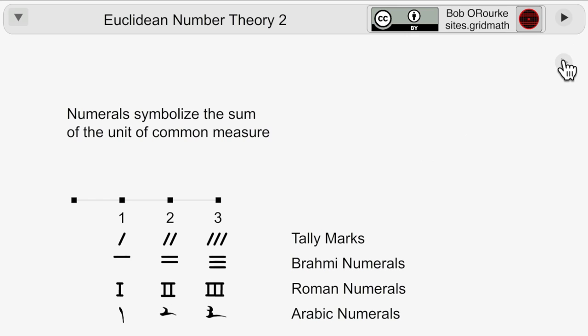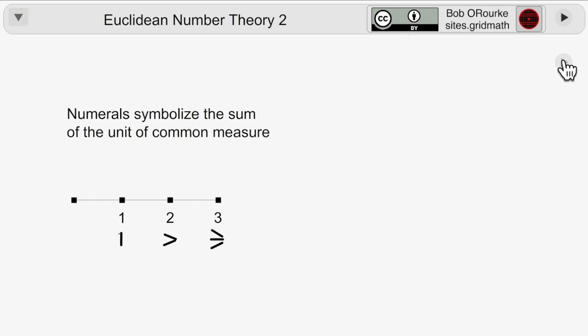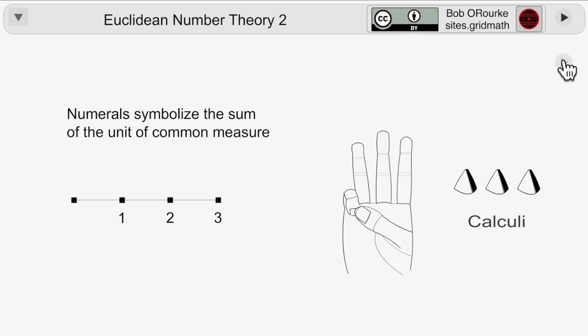And here everything is converted back into the numerals we use today. Now, when counting, most people start by using their fingers as discrete units. Calculi, or counting stones from the Middle East, were used to the same effect. And that's where the words calculus and calculation derive from.